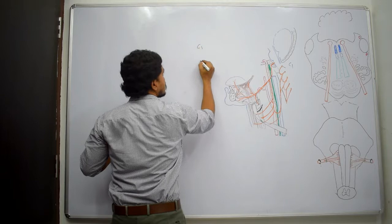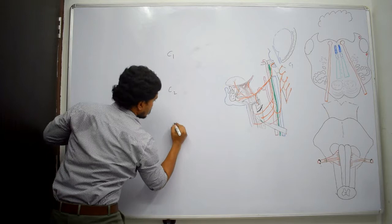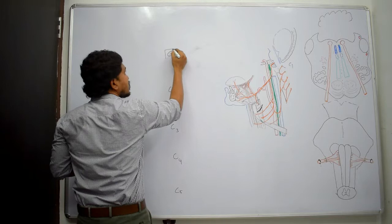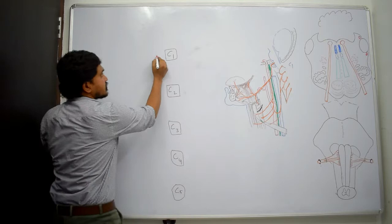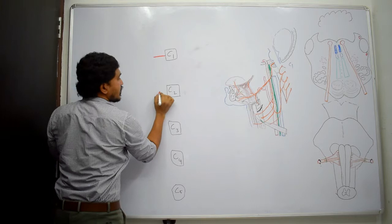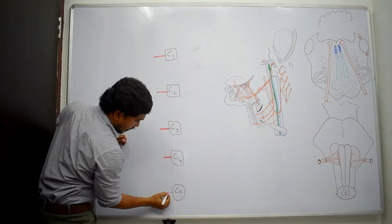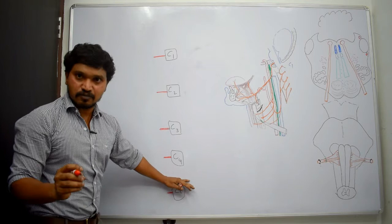Let me draw those structures. This is C1, C2, C3, C4, and we can draw C5 also. So these are the anterior primary rami of C1, C2, C3, C4, and C5. Actually C5 should not be included but it gives a small contribution for the formation of the phrenic nerve.